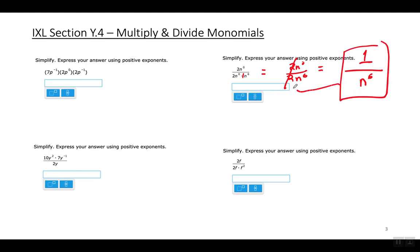Another way to think about it: when dividing with the same base, subtract exponents. So 0 minus 6 is negative 6, giving n to the negative sixth power. To get rid of the negative exponent, put n to the sixth power in the denominator. The simplified answer is 1 over n to the sixth power.